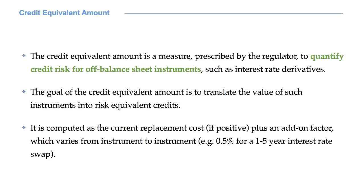A very common off-balance sheet item is an operating lease. The goal of the credit equivalent amount is therefore to translate the value of off-balance sheet items into risk equivalent credits. It is computed as the current replacement cost plus an add-on factor, which varies from instrument to instrument. For example, it is 0.5 percent for a one to five year interest rate swap. The add-on factor is set by the regulator.